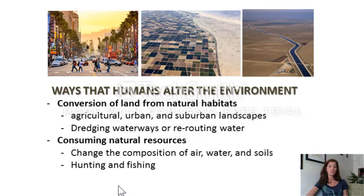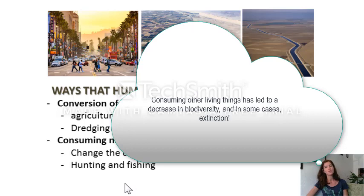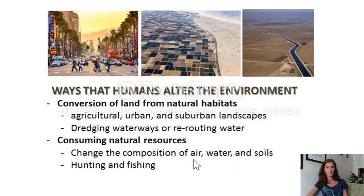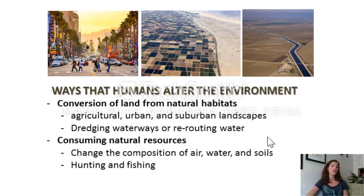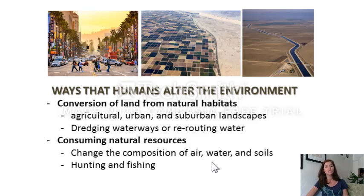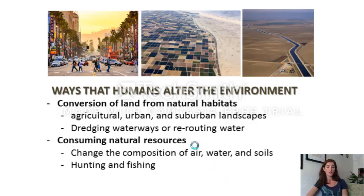We do some of these things directly and intentionally, and some things as a secondary effect. For example, we purposely change the composition of soils by adding nutrients, fertilizer, or herbicides in agricultural circumstances. Then a byproduct of this might be unintentionally changing the chemical characteristics of water, or unintentionally changing the composition of air through pollution.